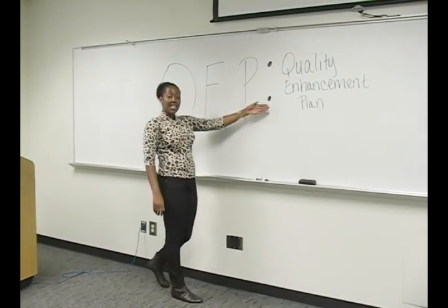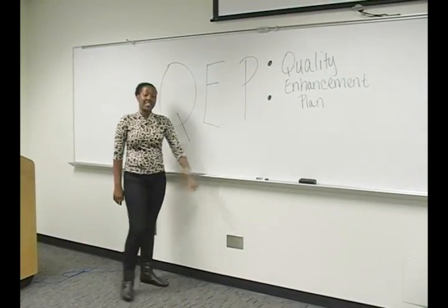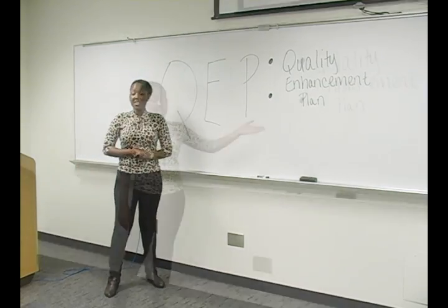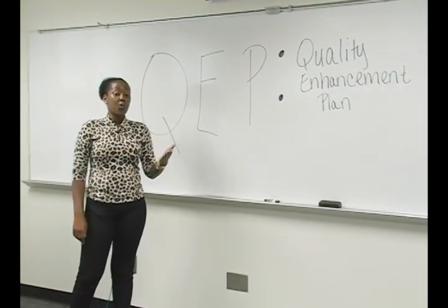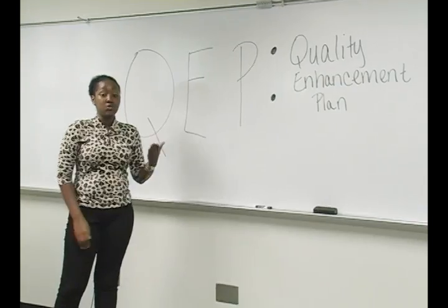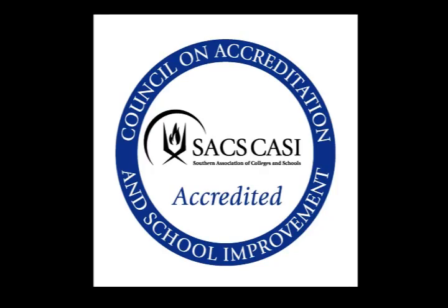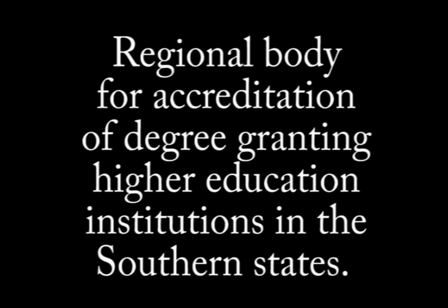QEP, Quality Enhancement Plan, is today's lesson. But before we talk about QEP, we must first talk about what it means to SSU, and we must first talk about SACS. SACS stands for Southern Association of Colleges and Schools. It is a regional body for the accreditation of degree-granting higher education institutions in the southern states.